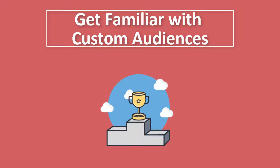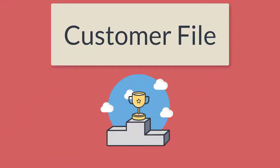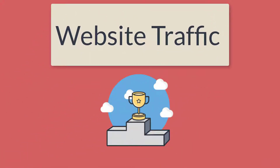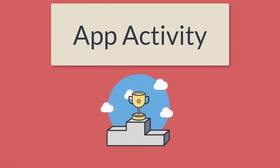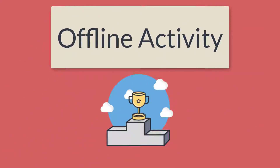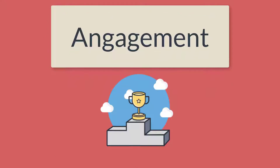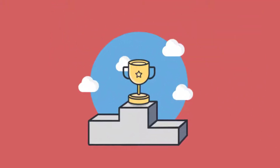Ninth tip: get familiar with custom audiences. Custom audiences allow you to target five different user segments. Customer file: match email addresses, phone numbers, and Facebook user IDs to existing Facebook accounts and target those accounts. Website traffic: target people who have visited your website or specific pages. App activity: target people who have launched or interacted with your app or game. Offline activity: target people who have interacted with your business in-store, by phone, or through other offline channels. Engagement: create a list of people who engage with your content on Facebook or Instagram. With each of these segments, you have the highly recommended option of adding layered behavioral, demographic, and interest targeting to refine your audience.